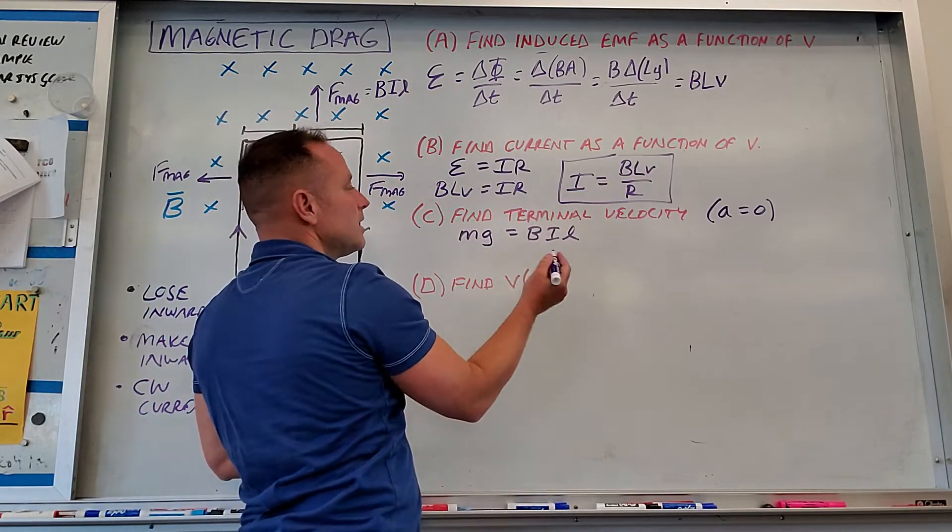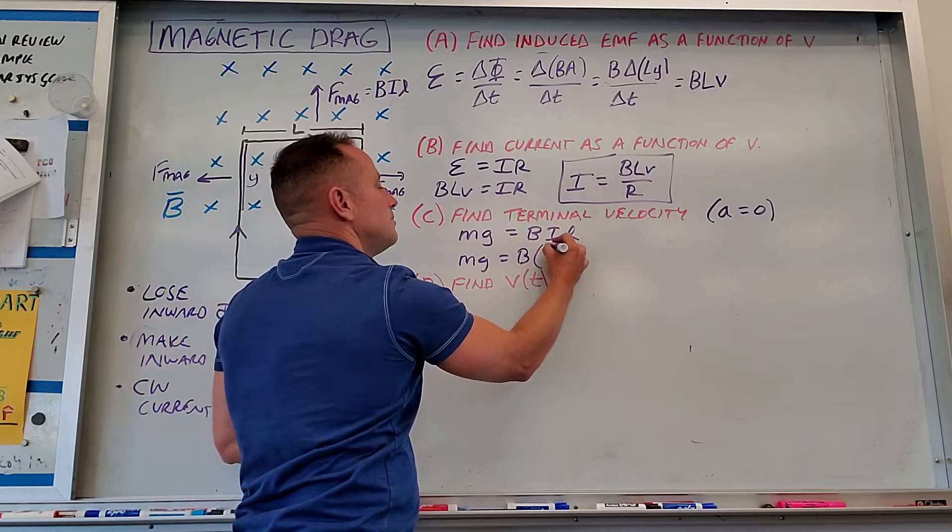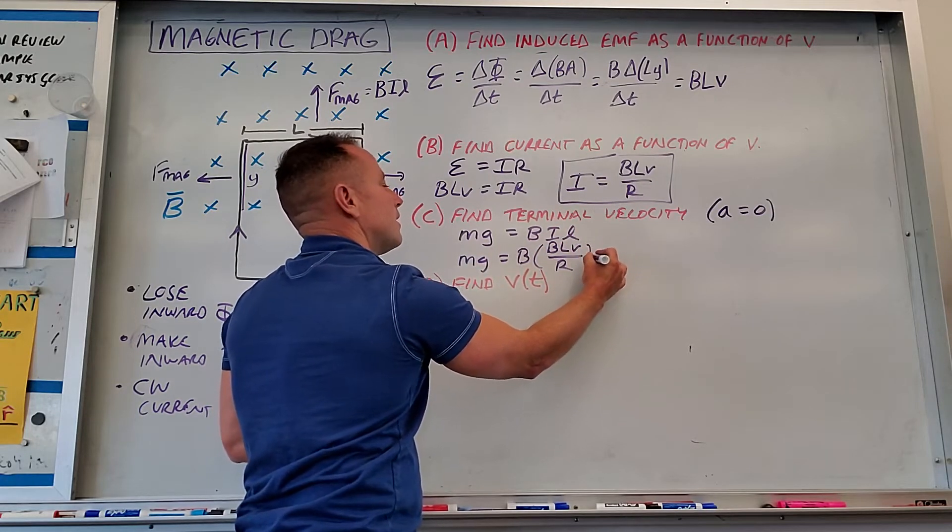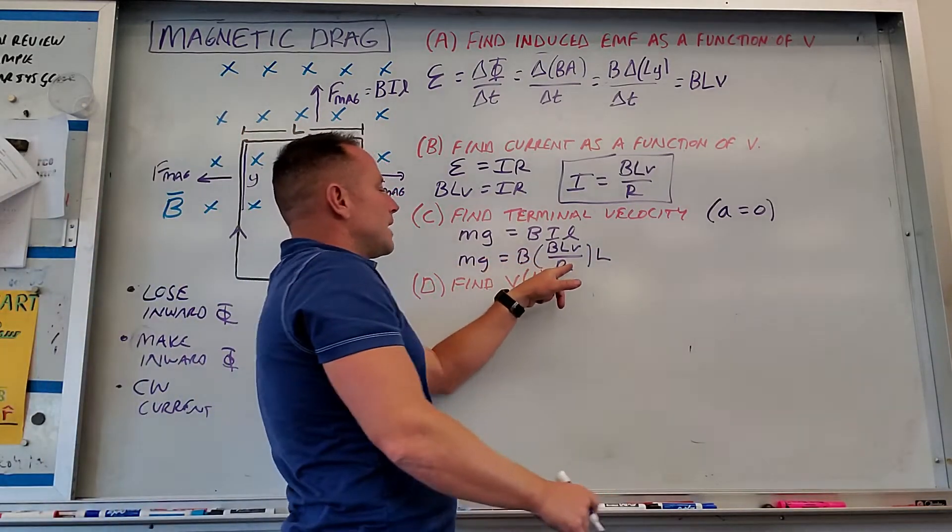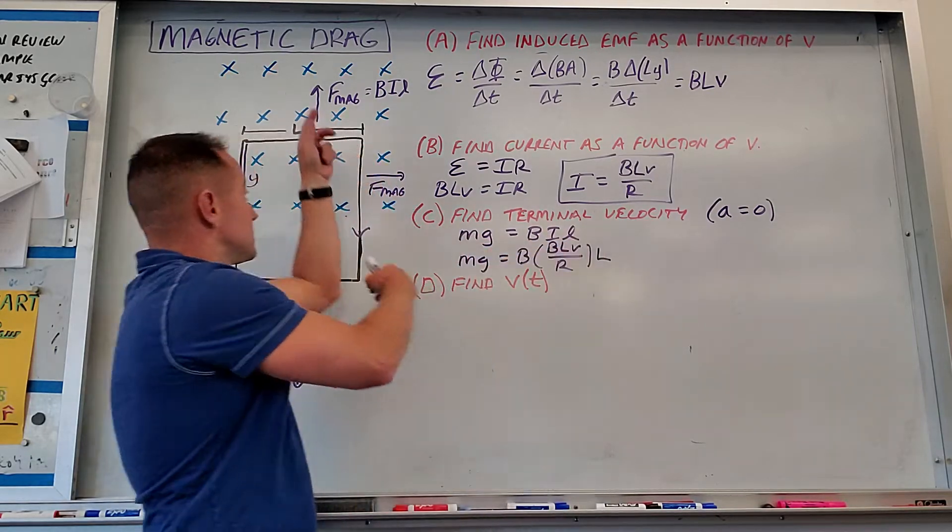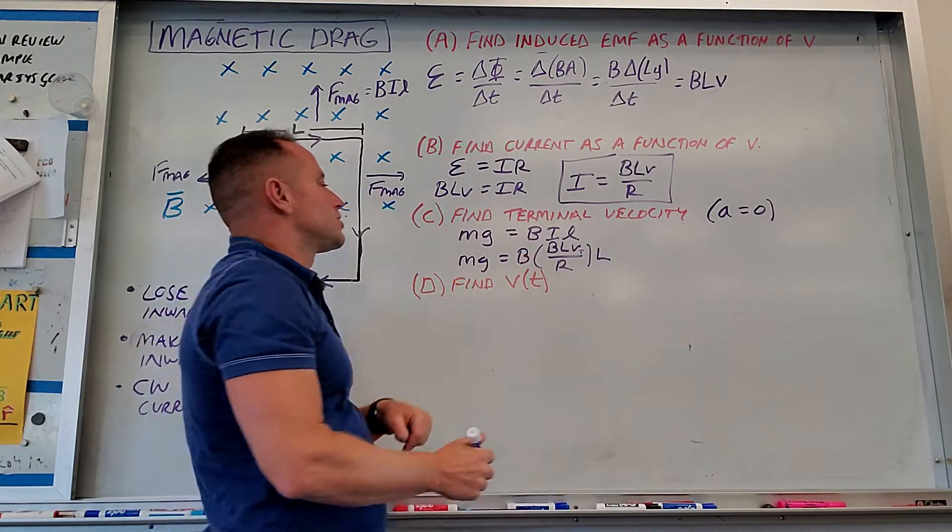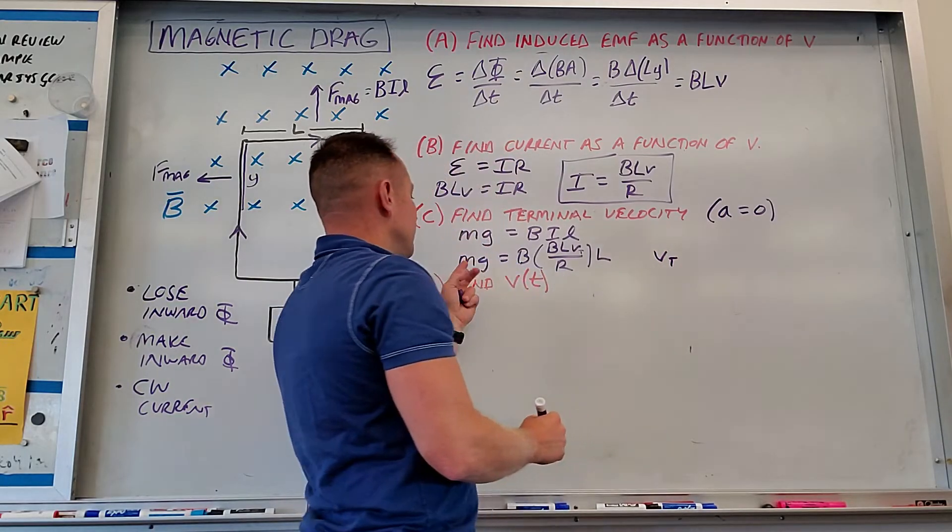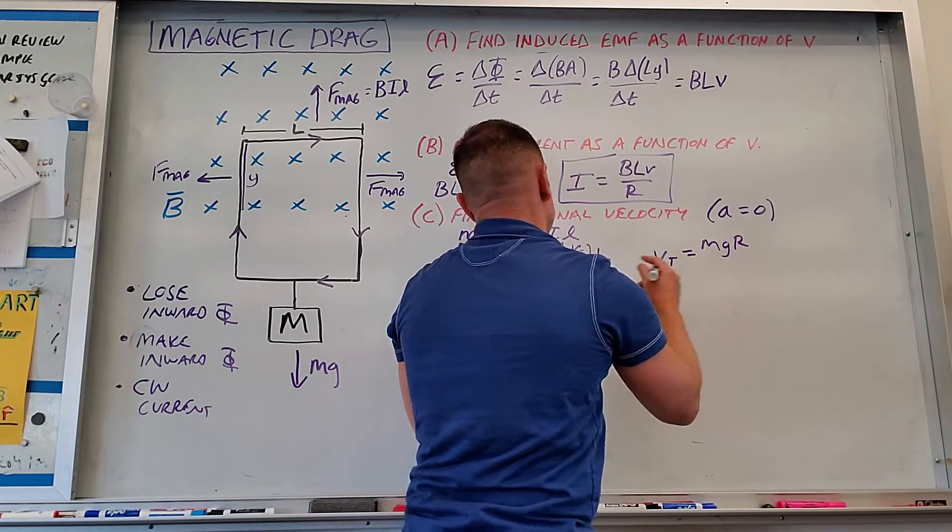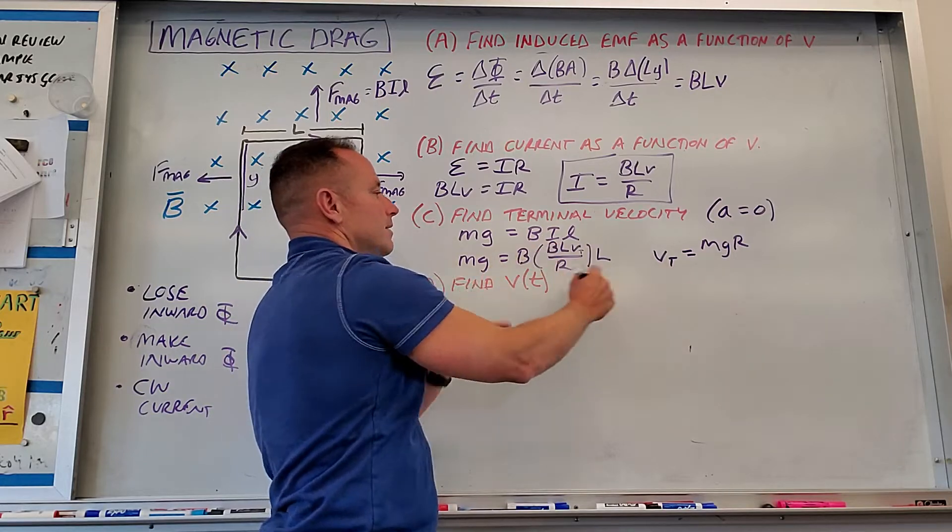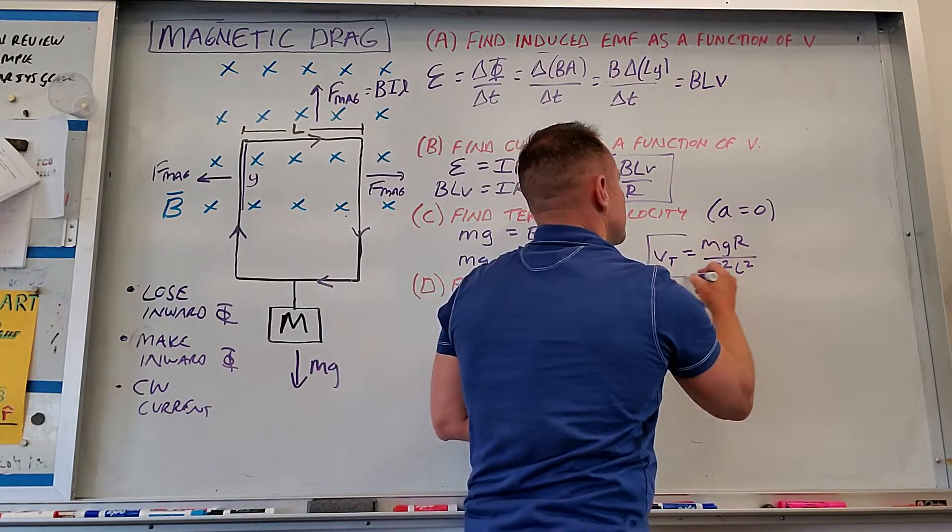And so we can just make that substitution. And so what you get is Mg equals B, the current is BLV over R, and then times the length, capital L in this case. And so what we can do here is this is true at terminal velocity because these forces will balance then. So this V, in this case, is actually the special velocity VT. We can just solve for VT. VT is going to be Mg times R, MgR, divided by B squared and divided by L squared.